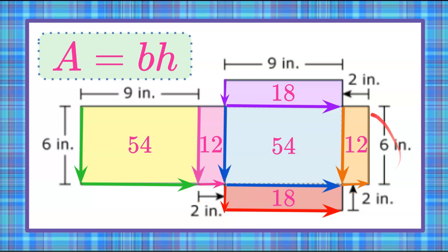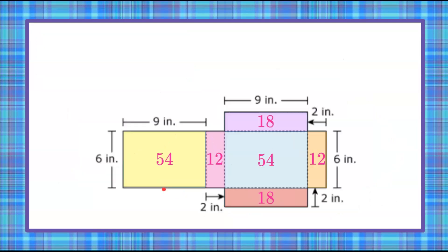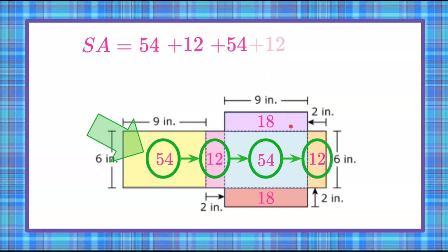So now that we have the area of all six faces, let's go and look at our figure and we're going to find the sum of all. So we're going to do 54, add 12, add 54, and then add 12. We're going to take this flap, add 18, and then this rectangle down here, and add another 18.